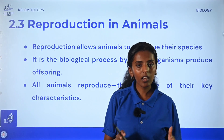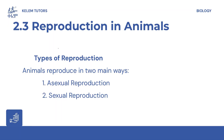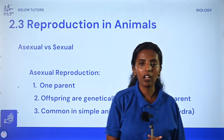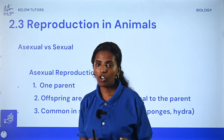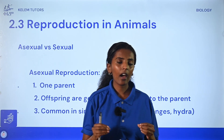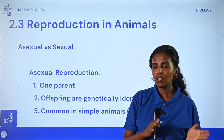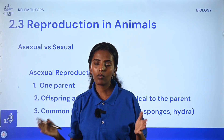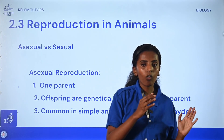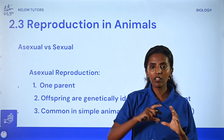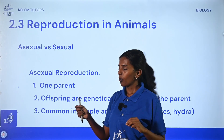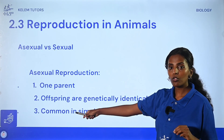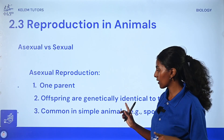In animals, we have two types of reproduction. Asexual reproduction needs only one parent — the offspring has the genetic material of only one parent, so it is basically a clone. There needs to be only one parent and the offspring is genetically identical to that parent.